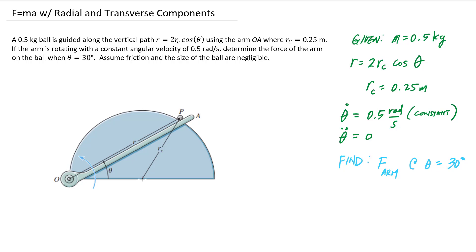A lot of times in problems that say 'find the force in the arm at a specific angle,' what that's really doing is asking us to find this force as a function of theta, and then evaluate at a specific instant — theta equals 30 degrees — so we can compare numbers rather than just equations. So one of the first things we want to do with any equation of motion problem is draw a schematic.